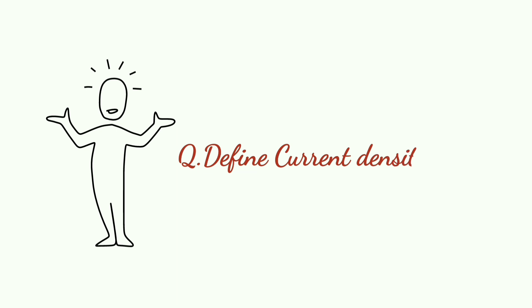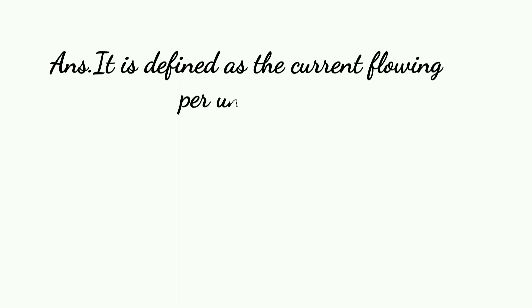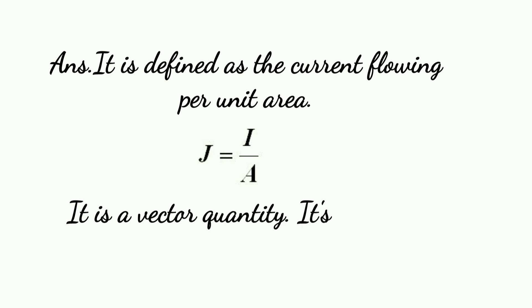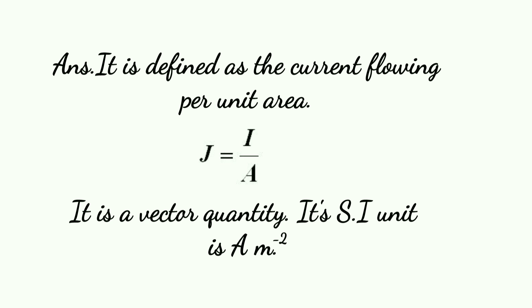The next definition is current density. Current density is defined as the current flow per unit area. So J equals to I upon A. Current density is a vector quantity. Its SI unit is ampere per meter square.